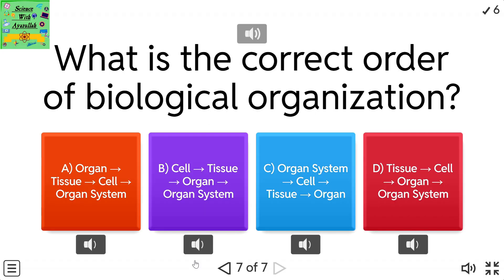What is the correct order of biological organization? A: organ, tissue, cell, organ system.